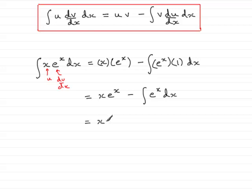So, copy the first term in again, x e to the x, and the integral of e to the x with respect to x is e to the x. Not forgetting the constant of integration, plus c. So there you have the integral of x e to the x with respect to x.